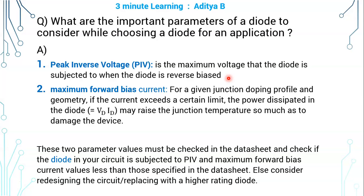So depending on the remaining circuit elements, some voltage drop appears across this reverse biased diode. We should ensure that in our circuit, the diode is subjected to a peak inverse voltage value less than that mentioned in the datasheet for that diode.